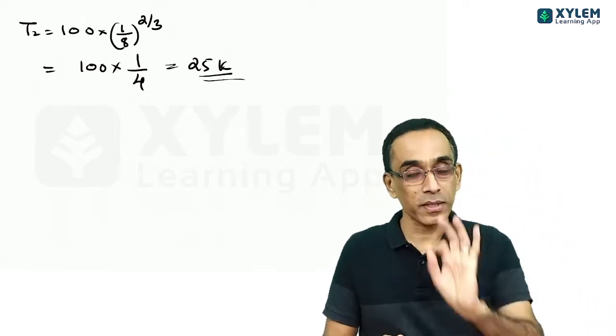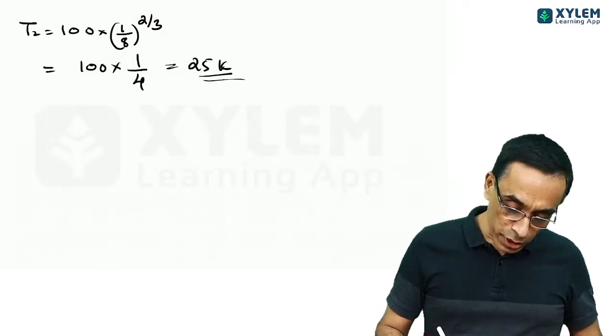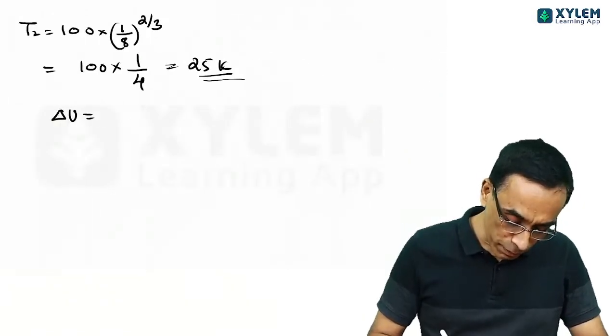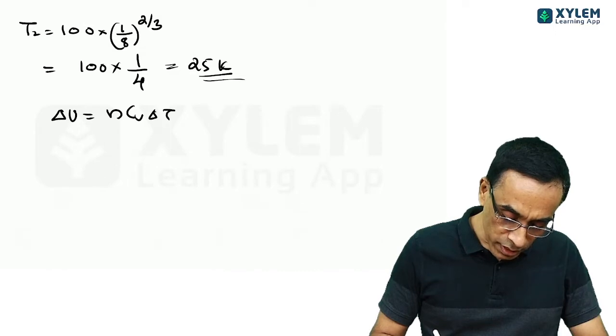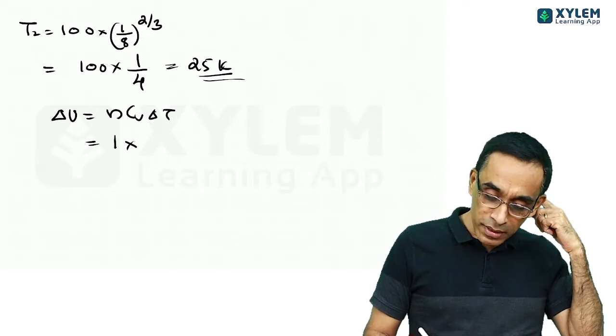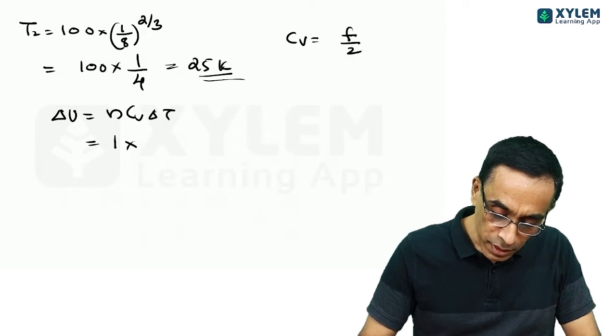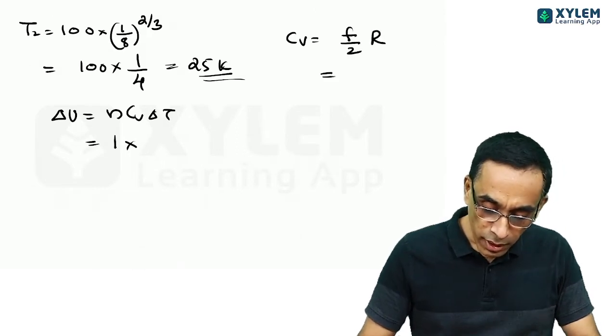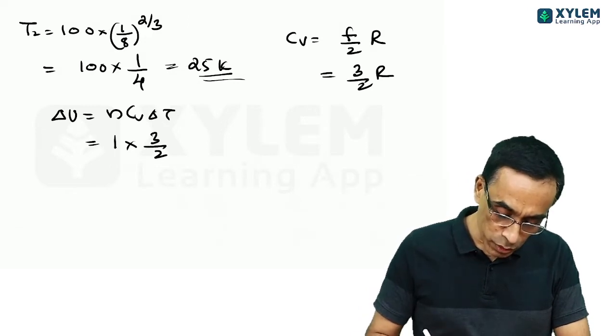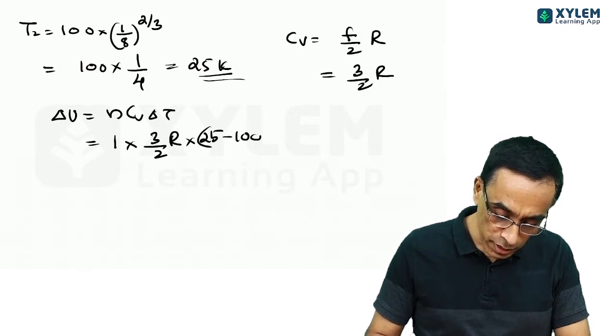So the temperature decreases and internal energy decreases. We know T2 and T1. Now delta U can be calculated. Delta U equals, how many moles are there? One mole. N Cv delta T, which is 1 into Cv. Cv for a monoatomic gas is given by F by 2 R. And F is nothing but 3, so 3 by 2. So 3 by 2 R into delta T, T2 minus T1, 25 minus 100.